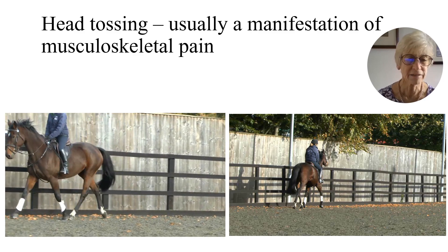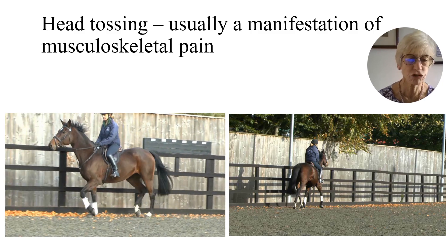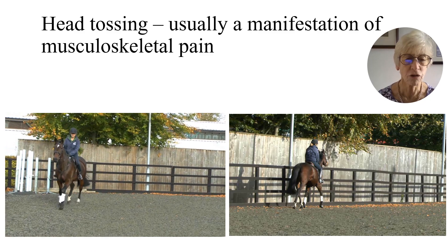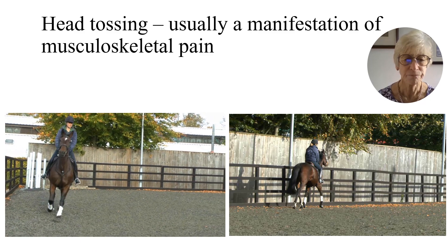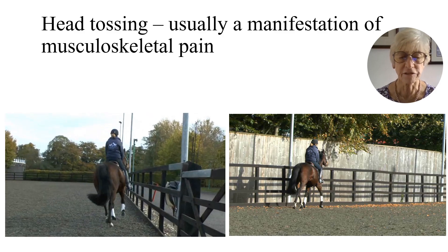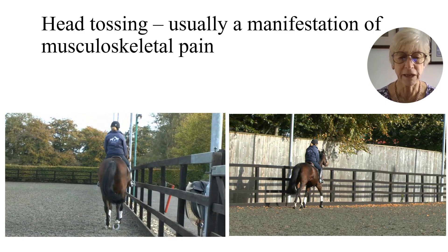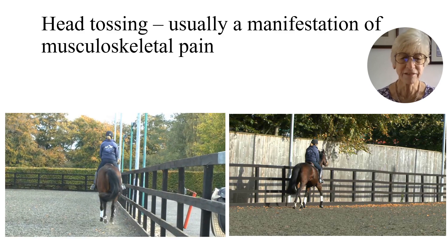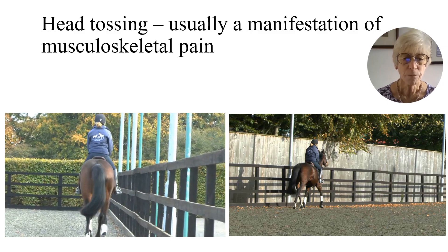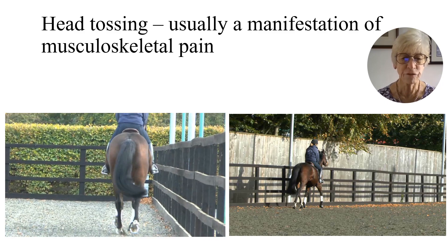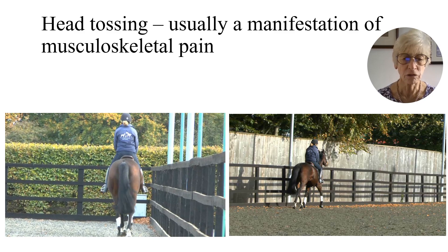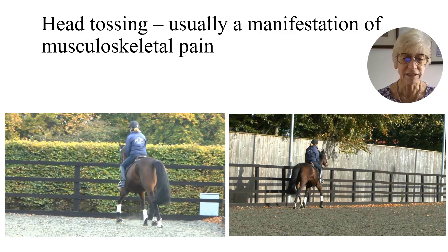The horse lacks hind-limb impulsion. There is a bilateral hind-limb toe drag. The saddle doesn't fit particularly well, and we can see that it oscillates from side to side, more to the right than to the left. This is somewhat dependent on the diagonal on which the rider sits.